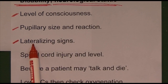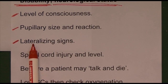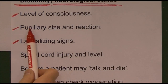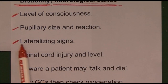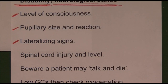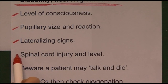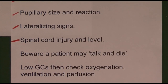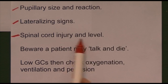With lateralising signs, the weakness will be on the opposite side to the haematoma: if the right side of the body is weak, the haematoma is on the left side of the brain. With pupils it is the same side; with the body it is the opposite side. We also need to assess any spinal cord injury — identify the level of pathology: cervical, thoracic, or lumbar spine.